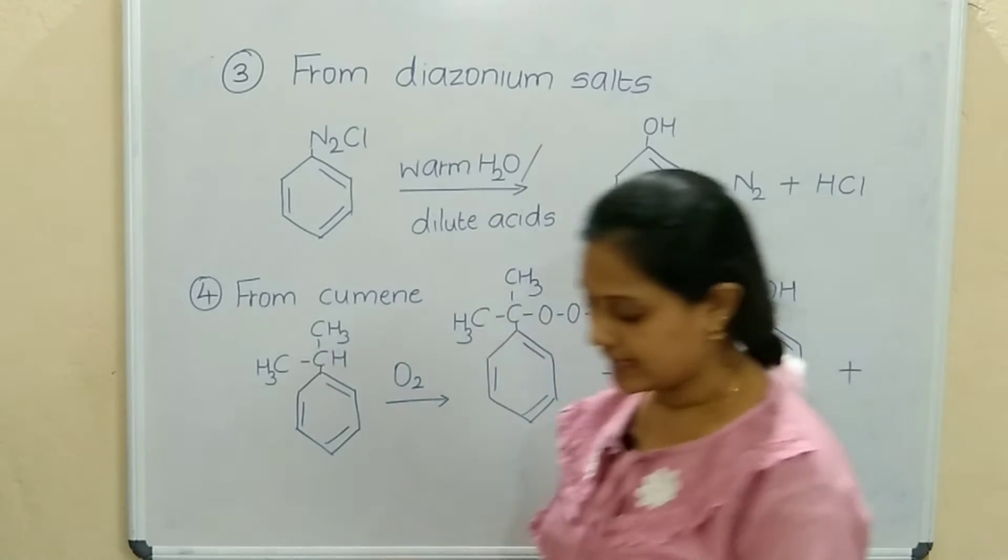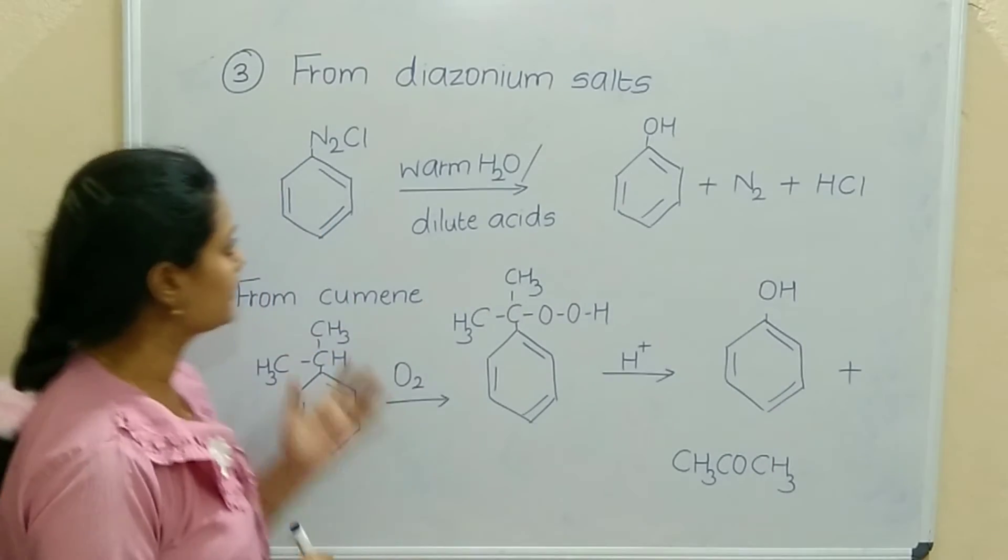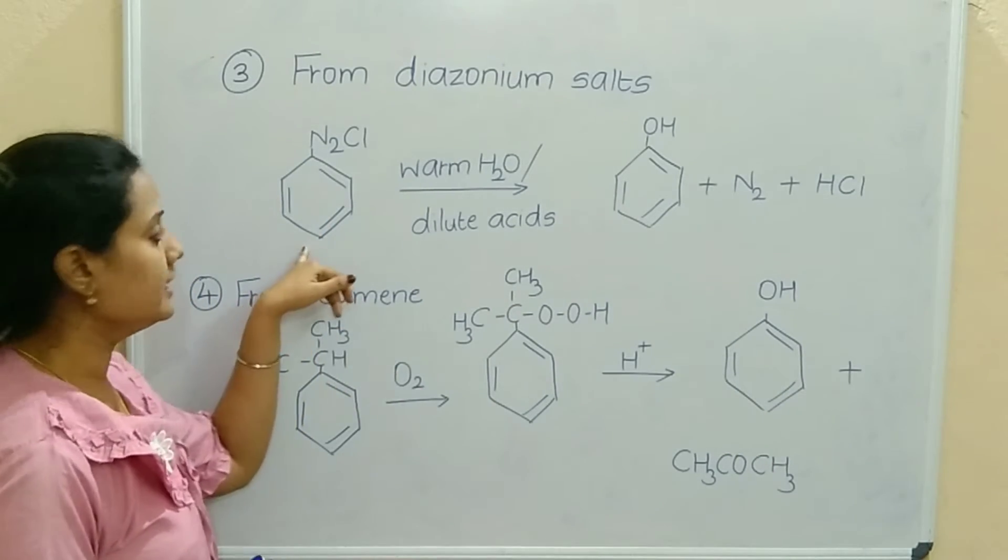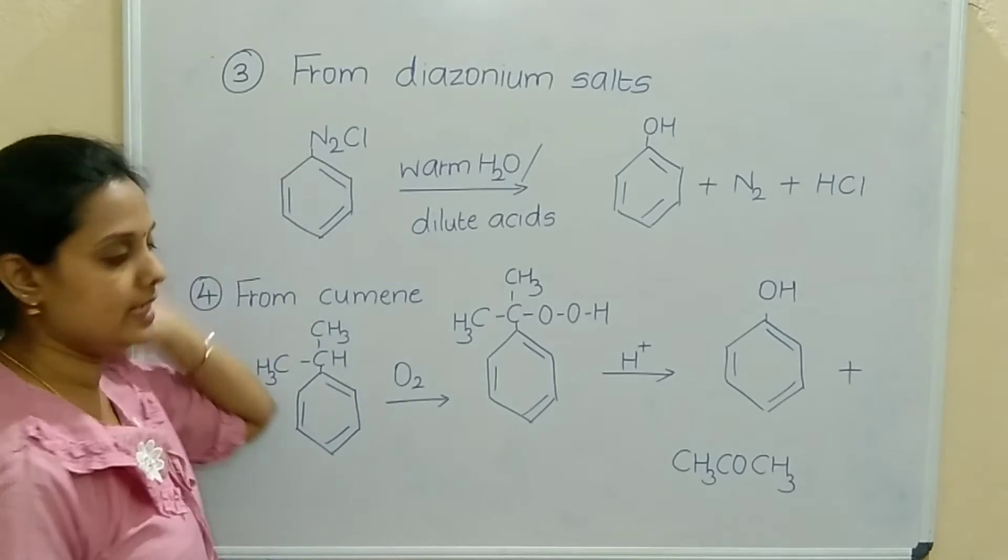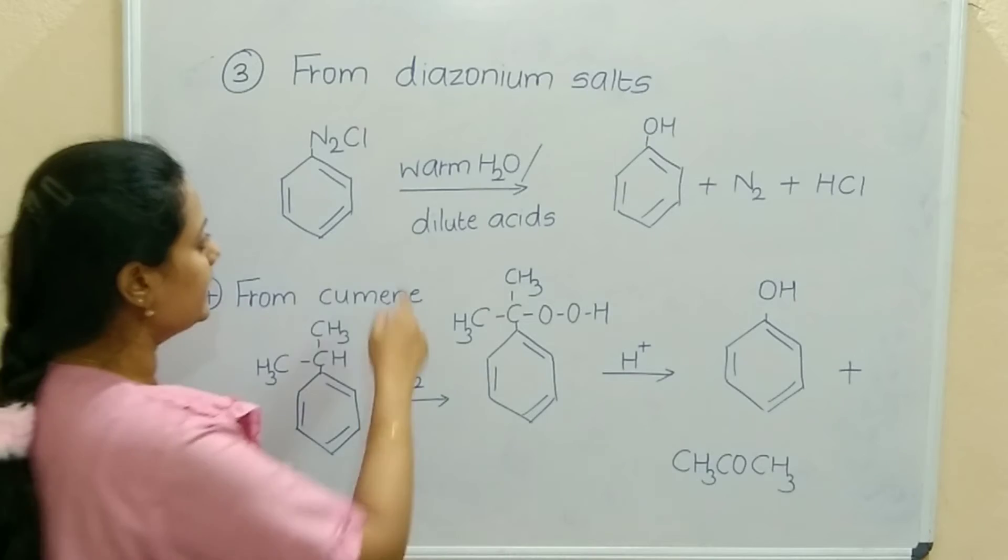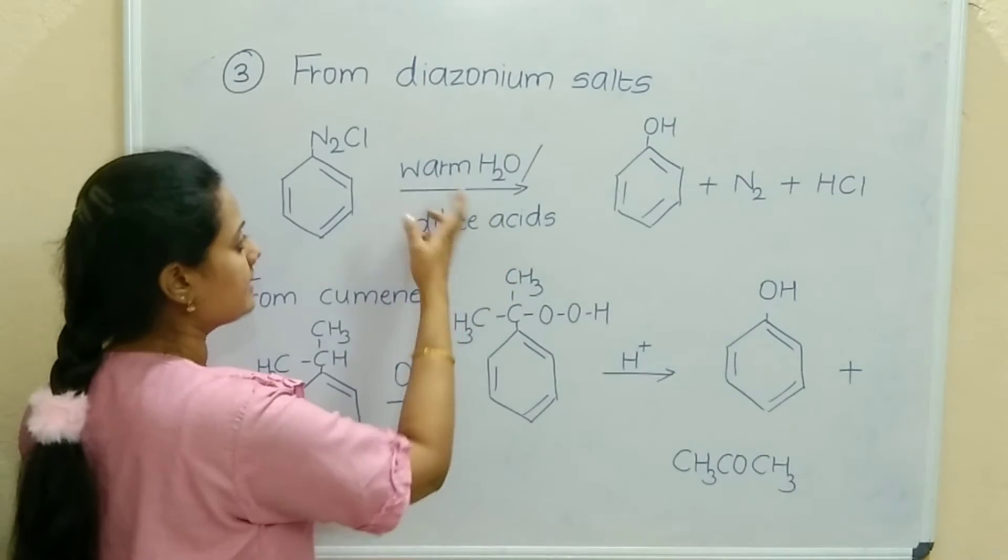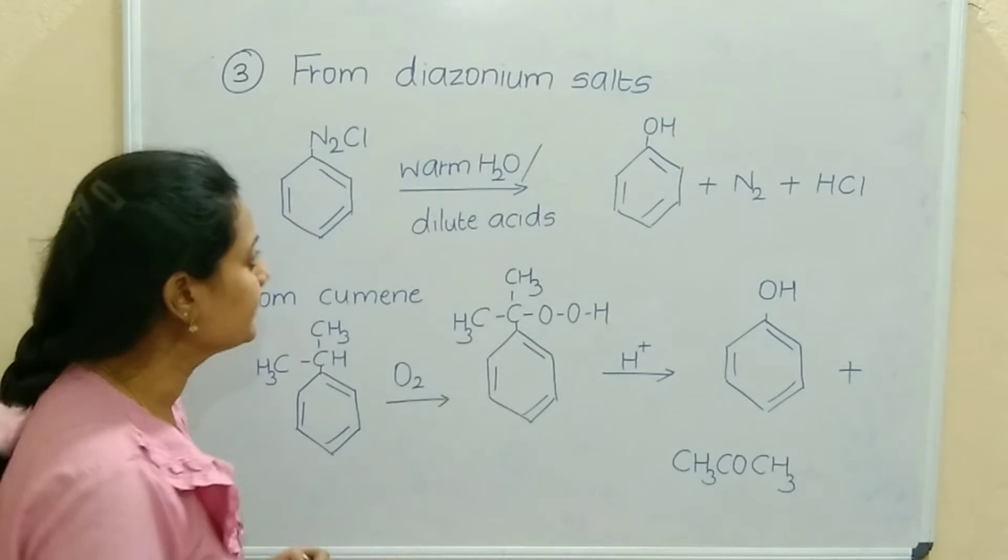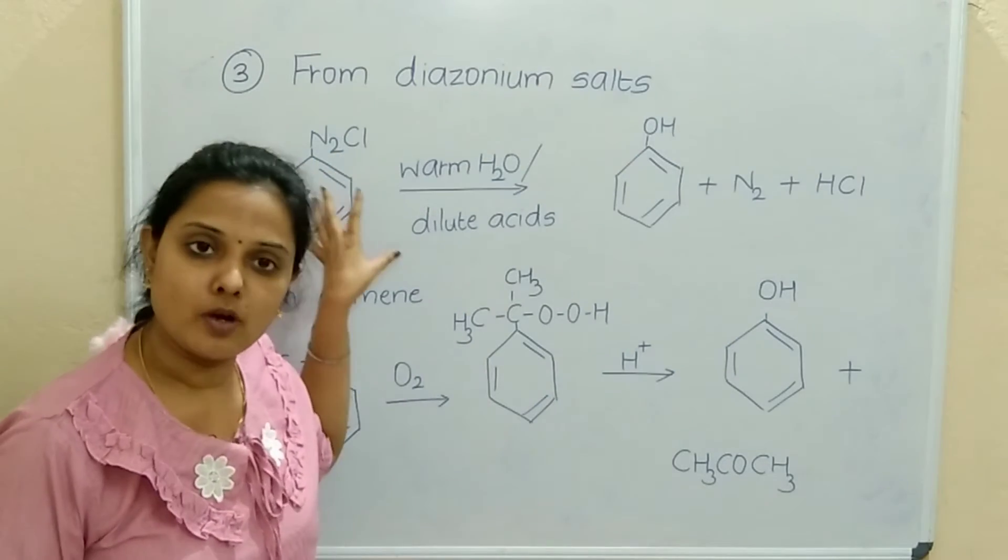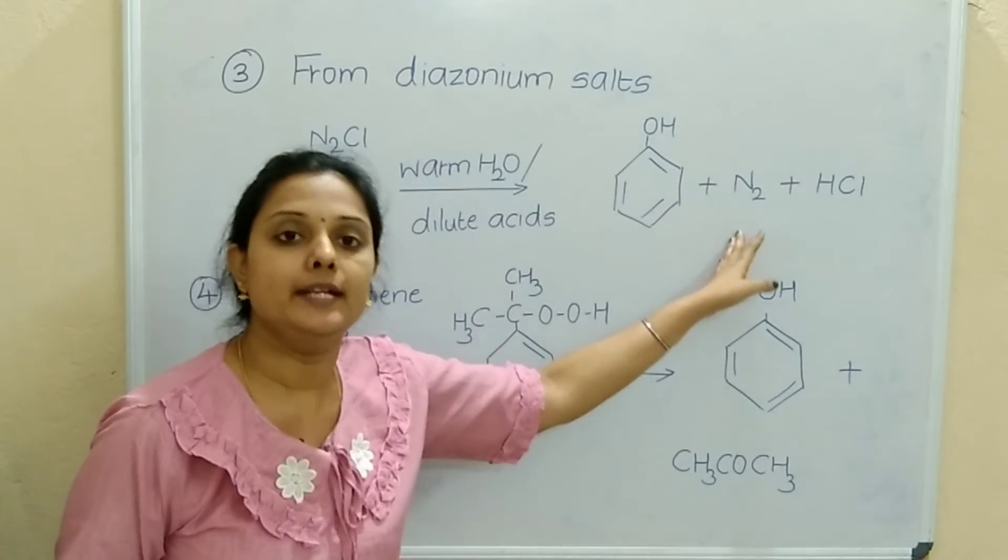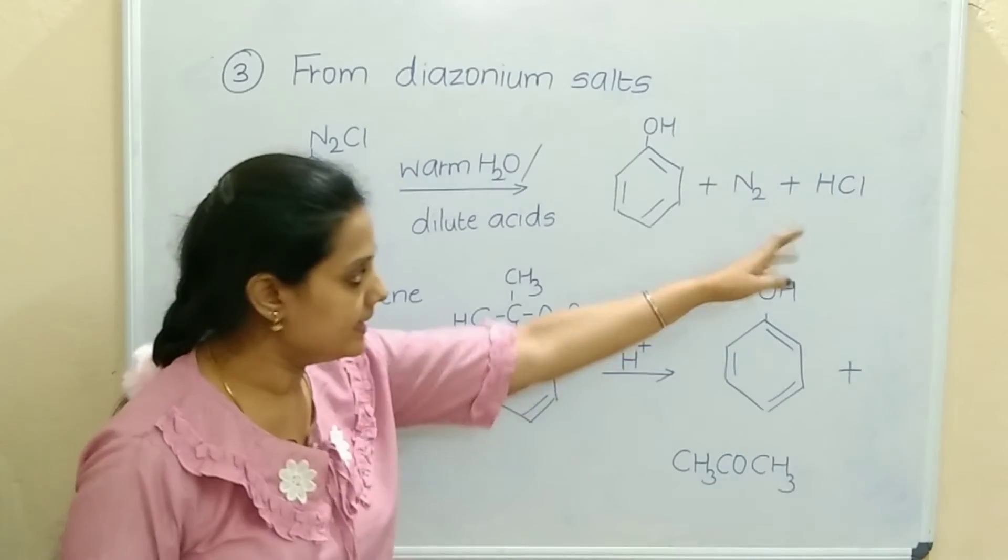Next preparation of phenol is from diazonium salt. I have taken here benzene diazonium chloride N2Cl on benzene ring. It is treated with dilute acid or warm water. We get OH, and always remember whenever diazonium salt is there, the by-product will be N2 nitrogen gas and HCl.